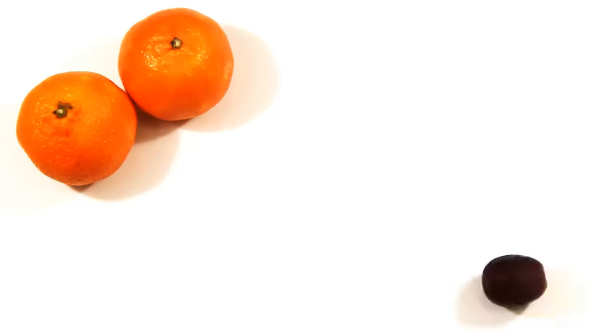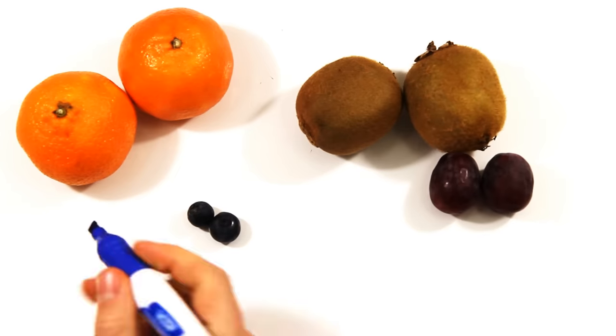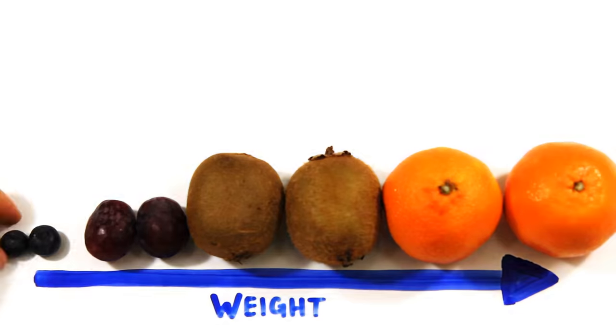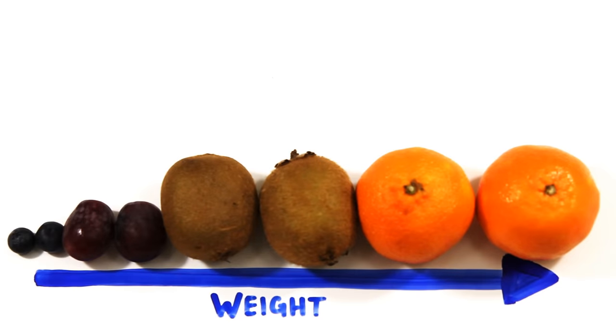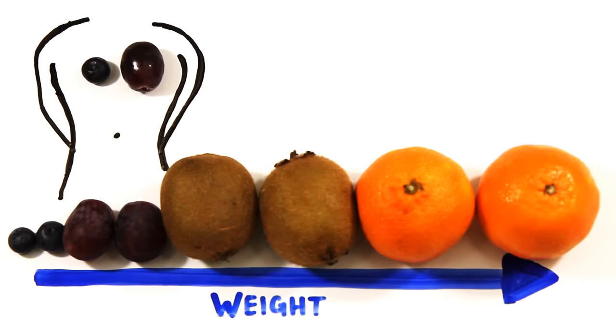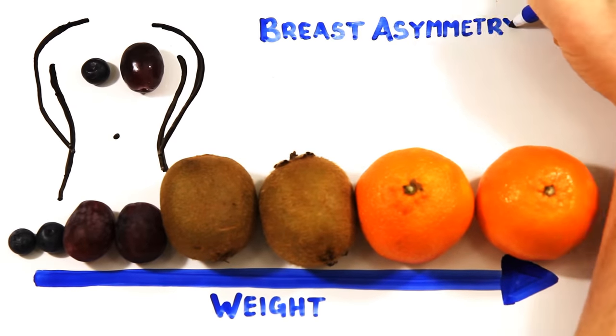Breasts come in all shapes and sizes, and though there is a positive correlation between breast size and weight, genes also play a crucial role in the size of boobs. 50% of the time, one breast is larger than the other, most commonly the left boob, known as breast asymmetry.